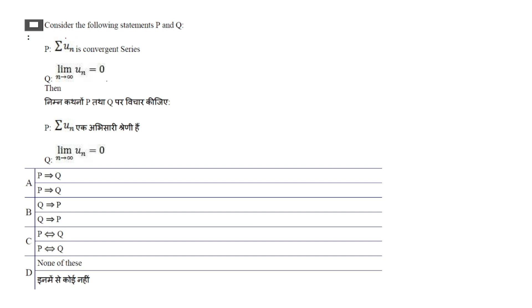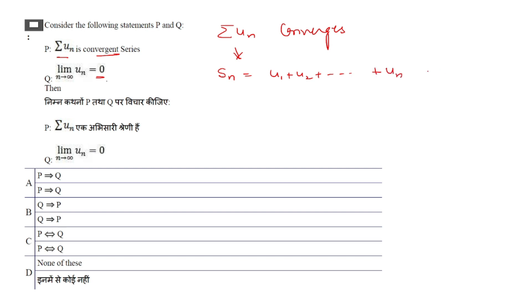Next question: consider statements P and Q. P states that a given series Σuₙ is convergent, and Q states that the limit of uₙ as n→∞ is 0. We need to check which statement implies the other. We know that when a series Σuₙ converges, its partial sum sequence Sₙ = u₁ + u₂ + ... + uₙ converges.